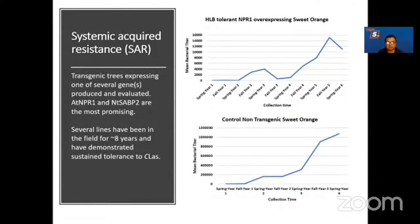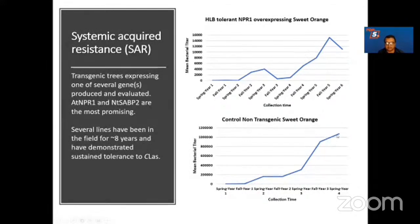Our group was the first to publish in 2015 on transgenic mediated resistance to HLB in PLOS ONE, and I will be glad to send that article to anyone interested. We have had several lines in the field for over eight years that have demonstrated sustained tolerance to CLas. The mean bacterial titer does grow in one of the transgenic lines, but it never crosses 12,000 even after year six. Whereas in the same plot, non-transgenic sweet orange trees show the mean bacterial titer going up and by year four the trees are dead.